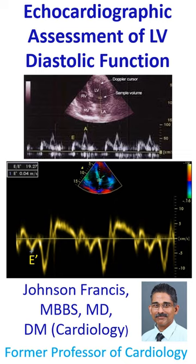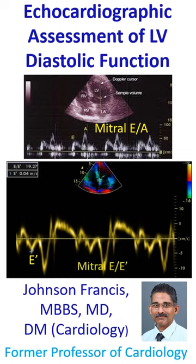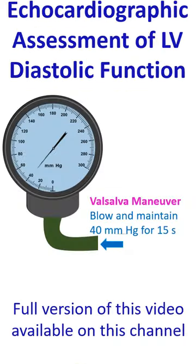Though there are several parameters for evaluation of left ventricular diastolic function by echocardiography, the most commonly used are the Pulse Doppler Mitral E by A ratio and Tissue Doppler Mitral E by E prime ratio.